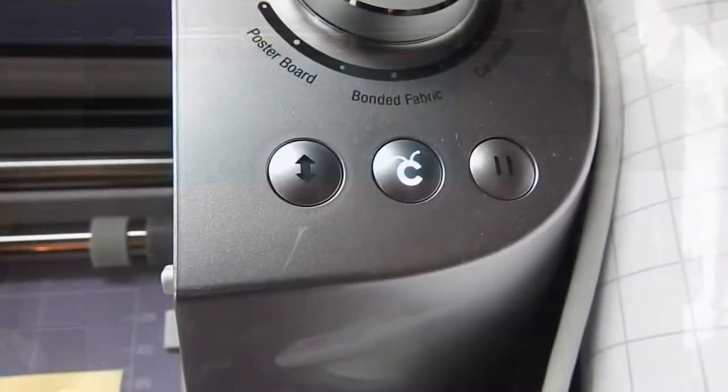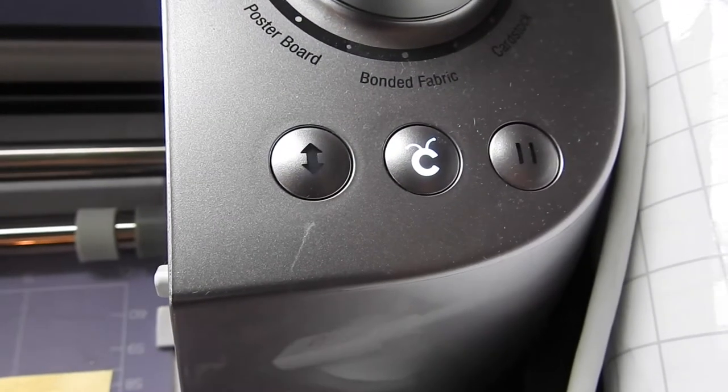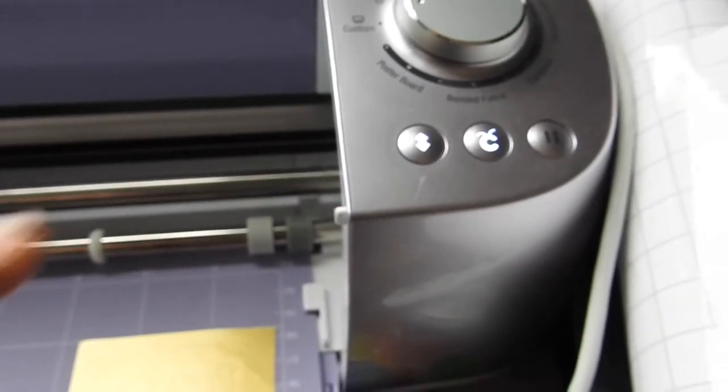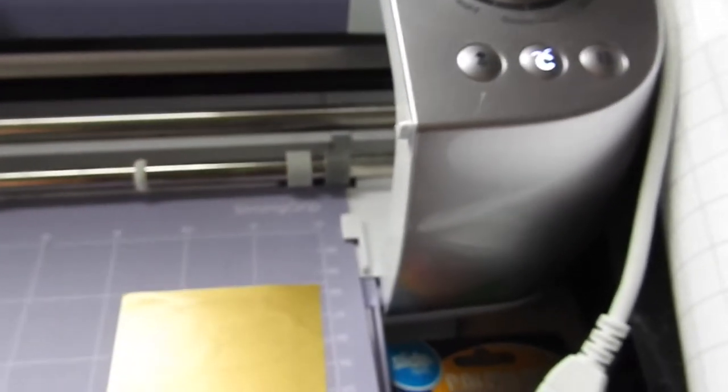Once it's all finished cutting, you'll see your arrow button blinking. You want to press that and it's going to release your mat. Let's go ahead and press that, and then we are ready to weed.